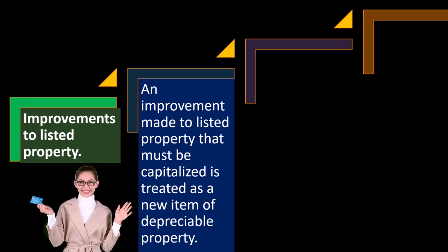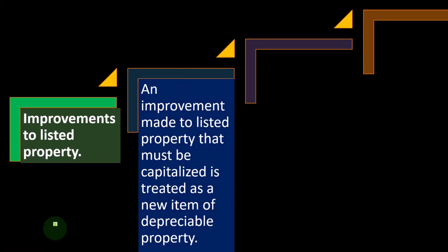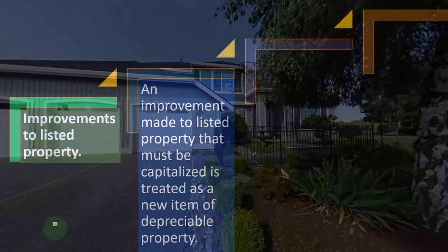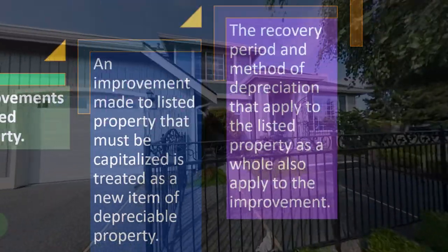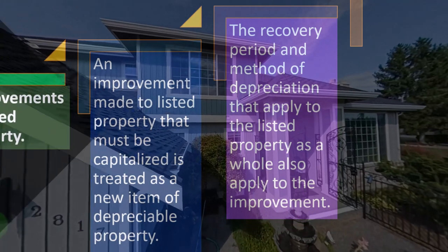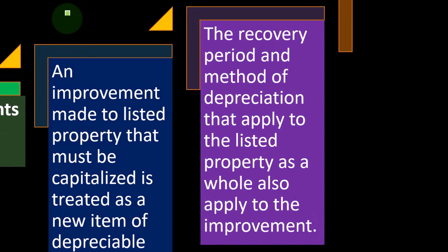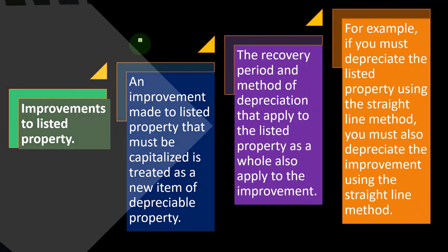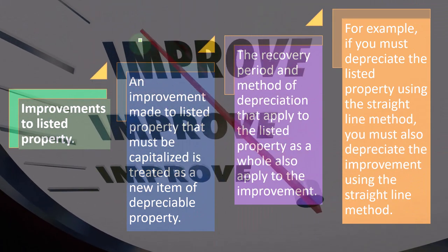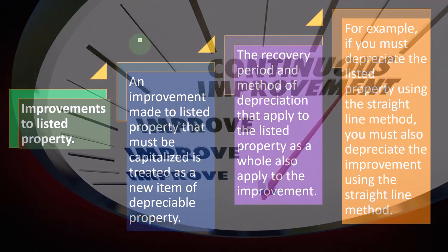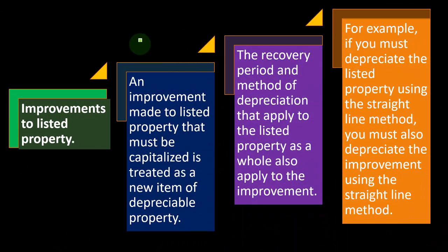Improvements to listed property: an improvement made to listed property that must be capitalized is treated as a new item of depreciable property. If it's increasing the life of the property, you'd have to put it on the books as an asset and record it as a separate improvement item. The recovery period and method of depreciation that applies to the listed property as a whole also apply to the improvement. For example, if you must depreciate the listed property using the straight-line method, you must also depreciate the improvement using the straight-line method.